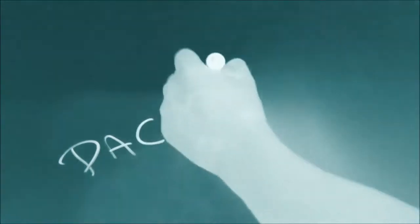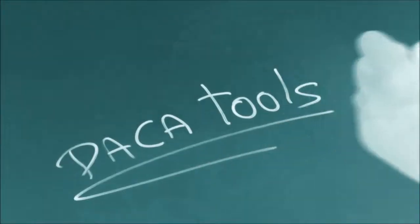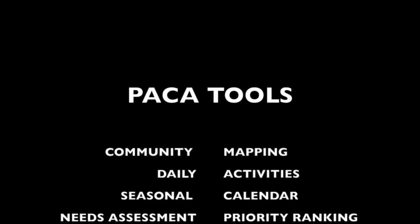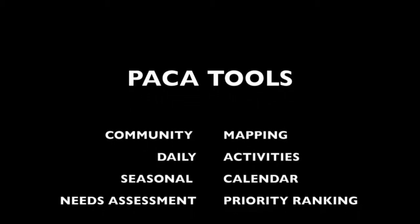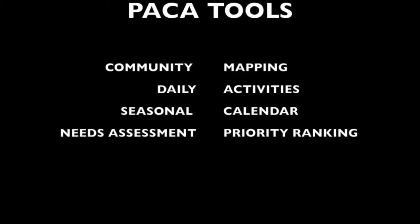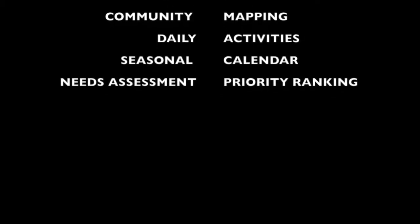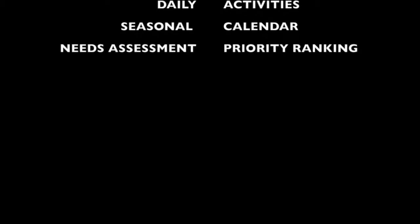PACA stands for Participatory Analysis for Community Action. The tools that make up PACA are Community Mapping, Daily Activities, Seasonal Calendar, Needs Assessment, and Priority Ranking. You will use and adapt the appropriate PACA tools to identify your community structure, its resources, gender roles, seasonal routines, and development opportunities.